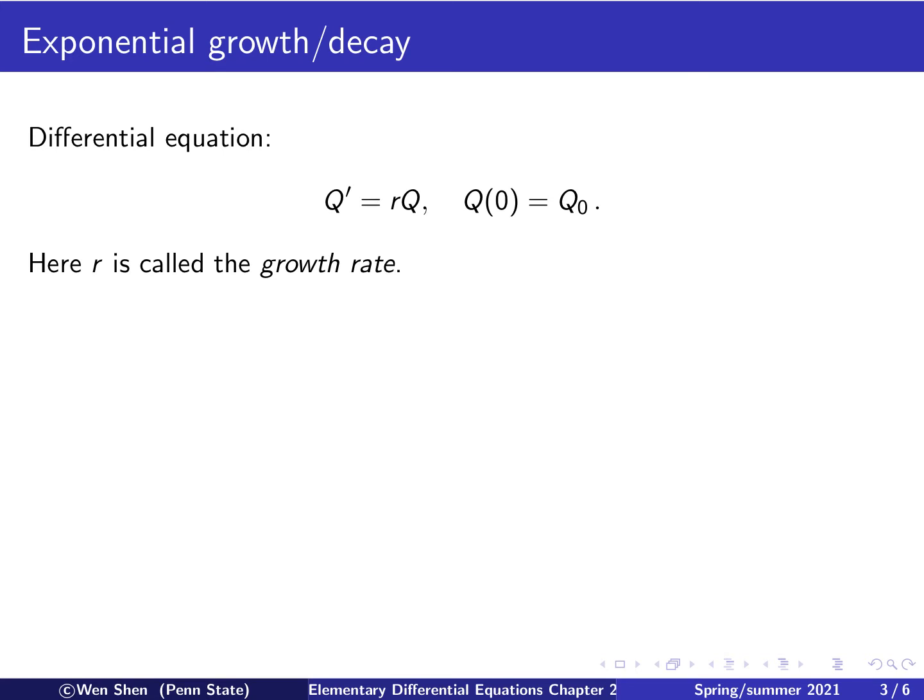Okay, so let's summarize the exponential growth and decay model. So here is this differential equation: Q' equals rQ, and the initial condition is given, Q(0) is Q0. So here we call r the growth rate. Let's say it's growing, r is positive. Okay, let's solve this.